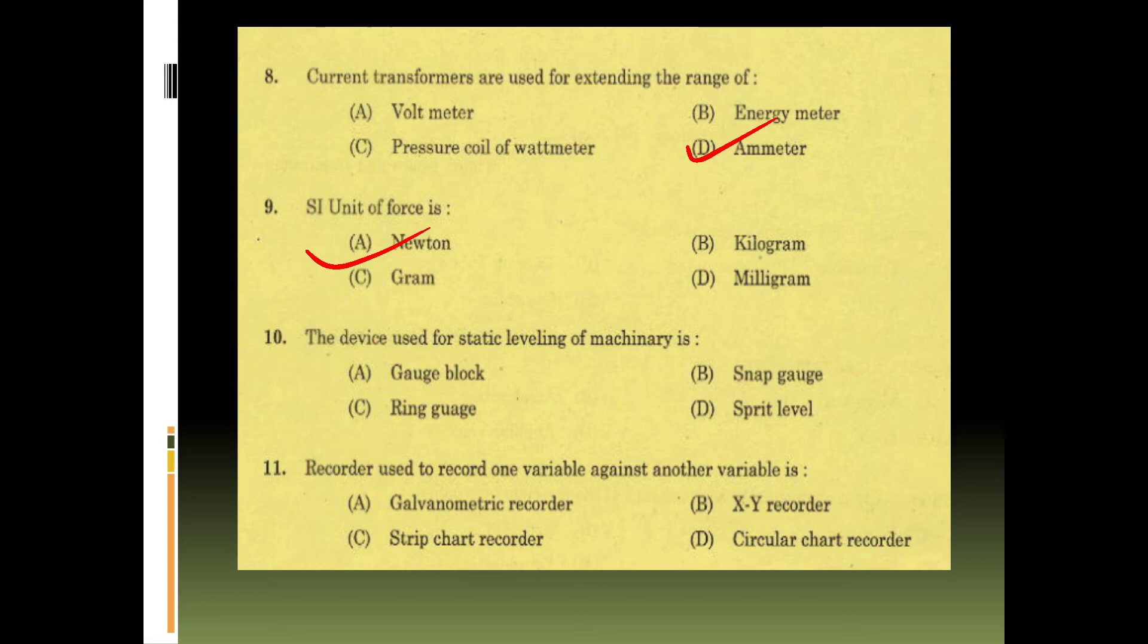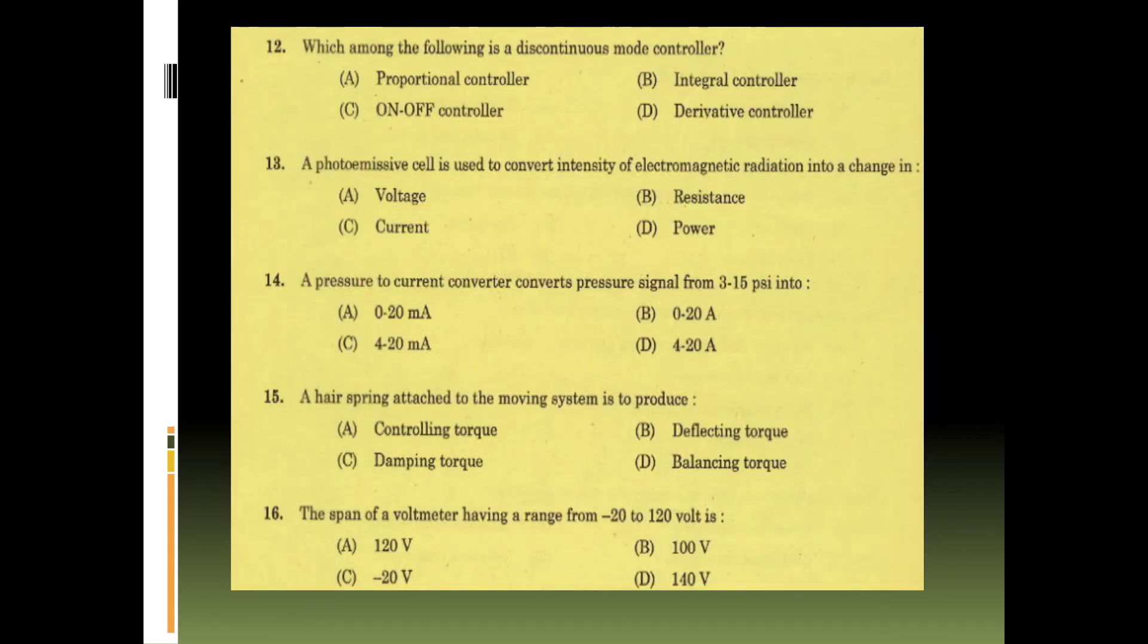Tenth question: the device used for static leveling of machinery is - gauge block, snap gauge, ring gauge, spirit level. It is option D, spirit level. Recorder used to record one variable against another variable is - galvanometer recorder, XY recorder, strip chart recorder, circular chart recorder. It is option B, XY recorder. Twelfth question: which one among the following is a discontinuous mode controller? Proportional controller, integral controller, on-off controller, derivative controller. This is option C, on-off controller.